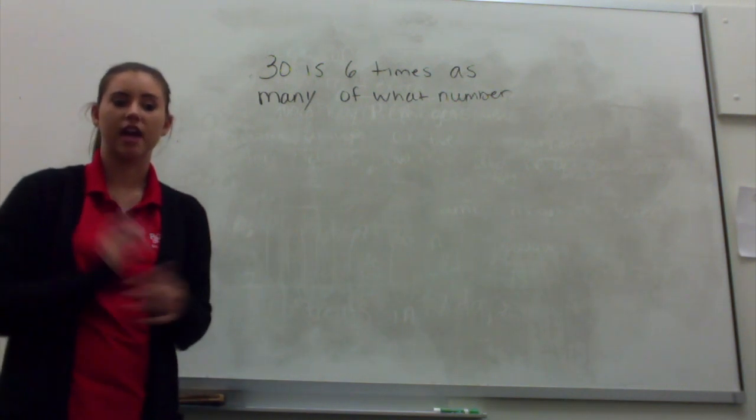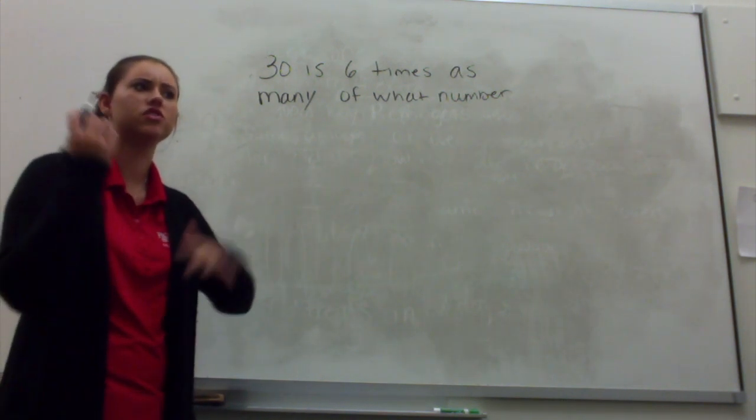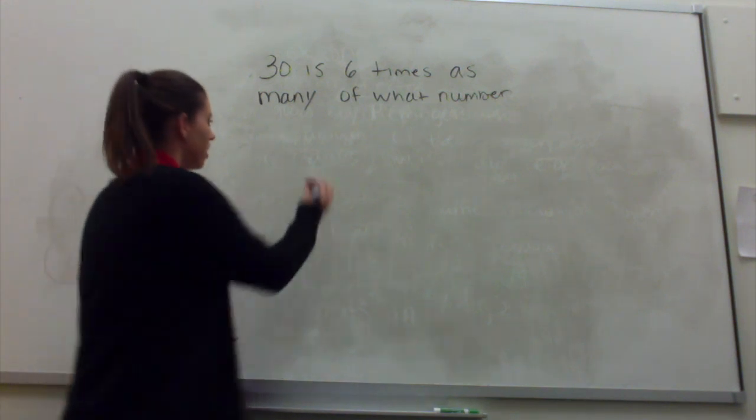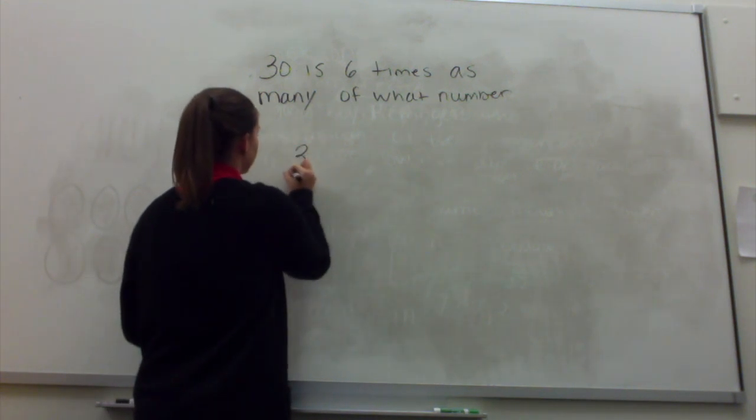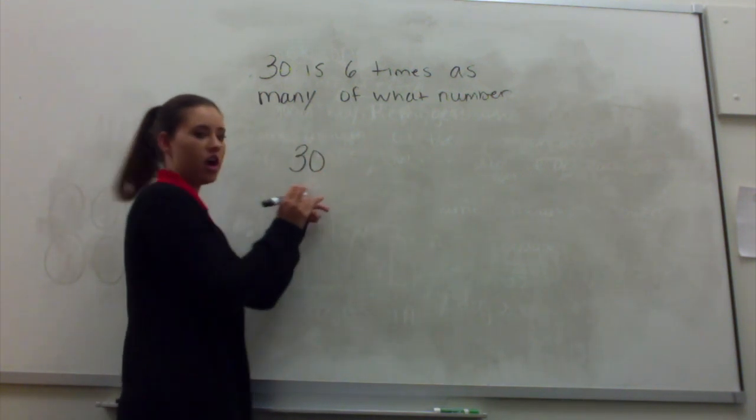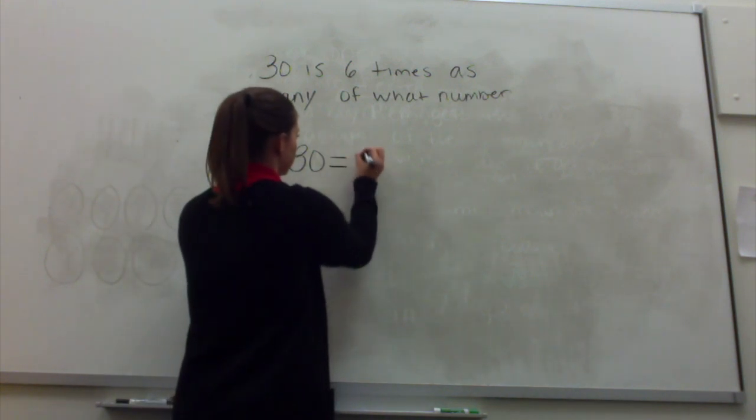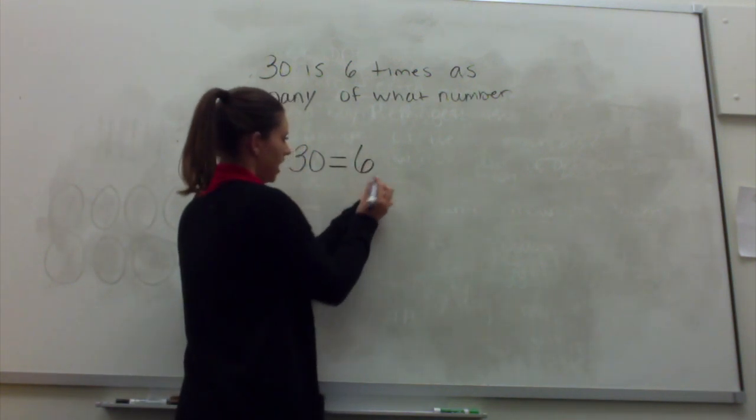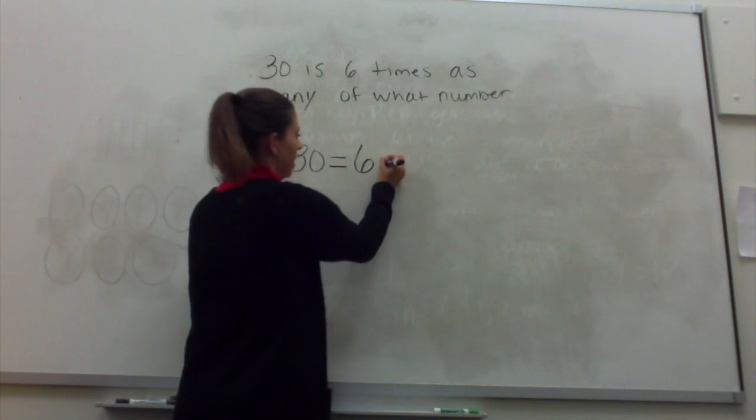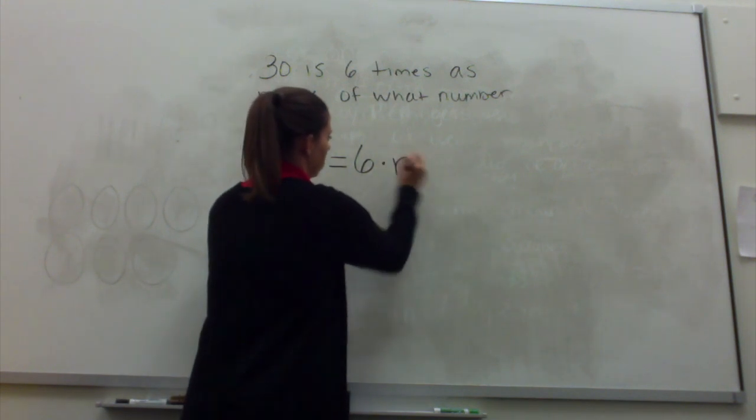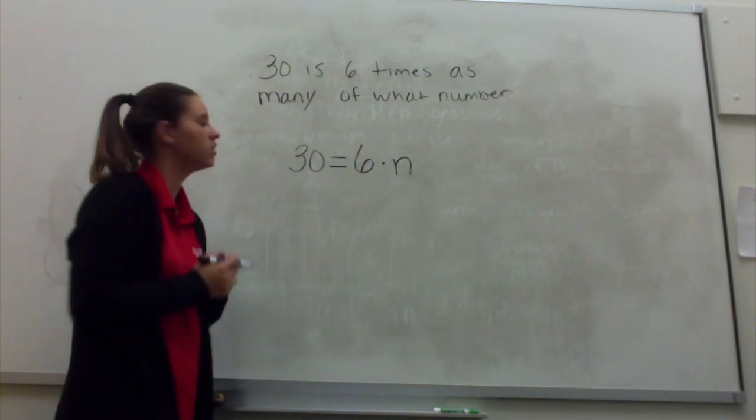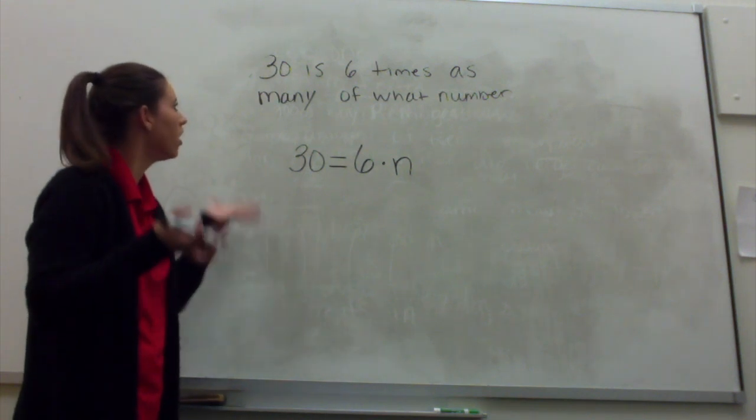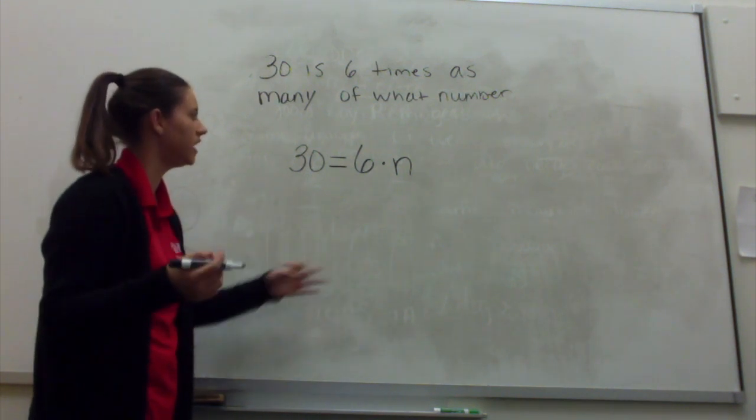So I'm going to write this as an algebraic expression so we can start thinking about how we might approach solving this. So 30, that's what we know, equals 6 times as many of an unknown number. So what we don't know is 30 is 6 times as many of what number?